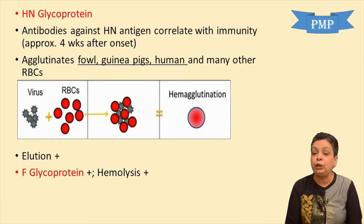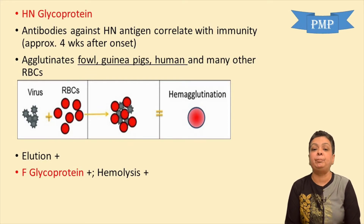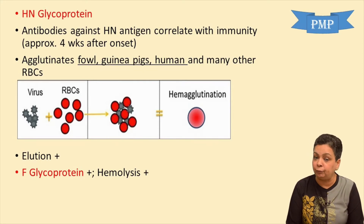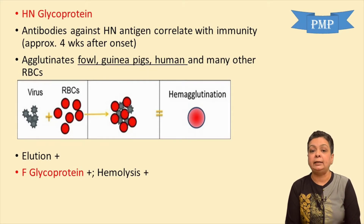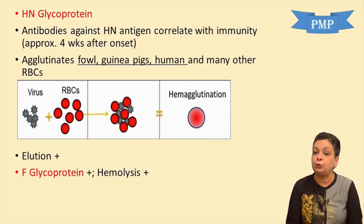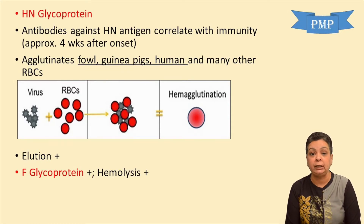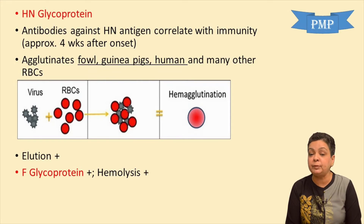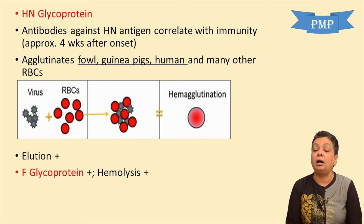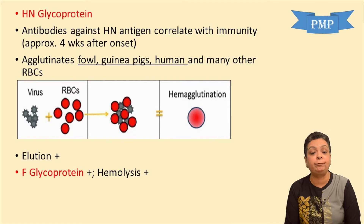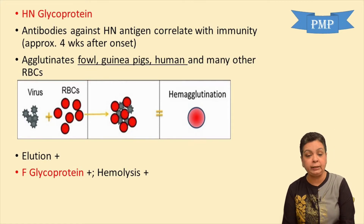The F glycoprotein, or fusion glycoprotein, is responsible for entry of the virus by fusion of the viral envelope with the host cell membrane. This F glycoprotein leads to syncytium formation and also has hemolysin activity. Importantly, mumps and parainfluenza viruses both have the HN and the F glycoproteins embedded in the lipid envelope.